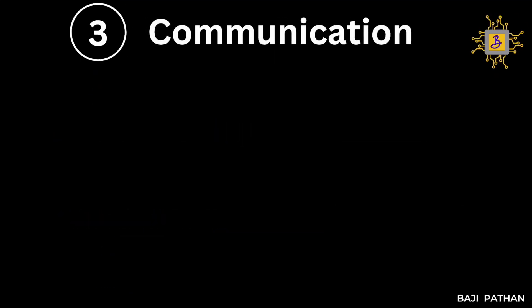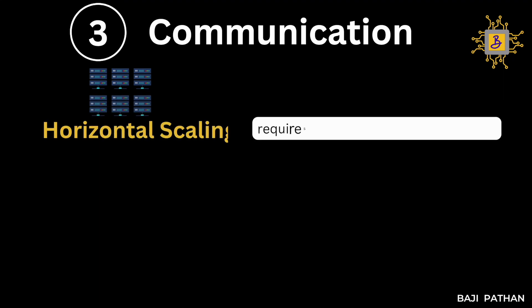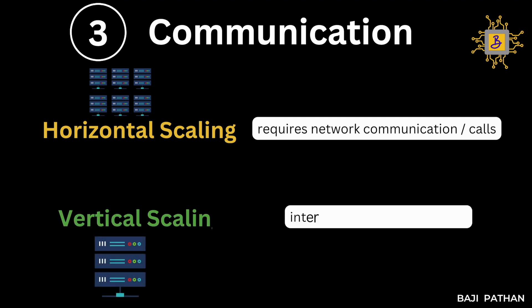The next factor is communication. In horizontal scaling, it requires network communication or calls between machines, which will be slower due to some additional overhead. In vertical scaling, it uses inter-process communication within a single machine, so there is no additional overhead like in horizontal scaling.